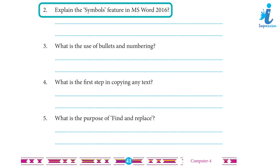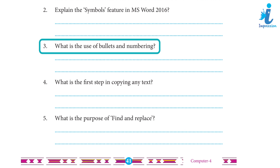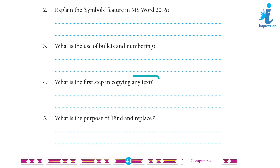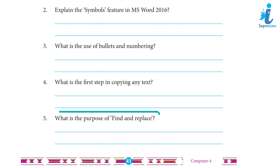2. Explain the symbol features in MS Word 2016. Answer: You can easily insert a special character, fraction or other symbols such as currency, check marks and many more in your Word documents. 3. What is the use of bullets and numbering? Answer: A numbered list follows some order while a bulleted list does not. 4. What is the first step in copying any text? Answer: Select the text you want to copy. 5. What is the purpose of Find and Replace? Answer: The Find feature allows finding a word or particular text in the document, and the Replace feature allows you to replace it with the corrected or another word.